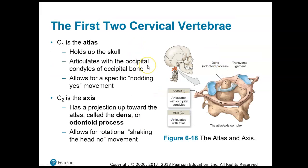Also know that the first two cervical vertebrae are called the atlas and the axis. The articulation between the atlas, which is C1, and the occipital bone is what allows you to nod your head yes. And shaking your head no is the atlas and the axis.